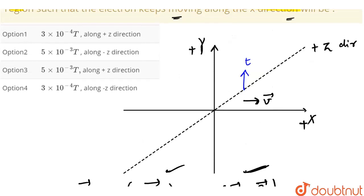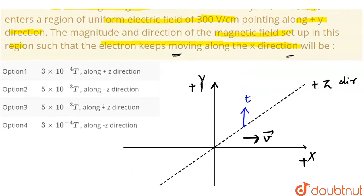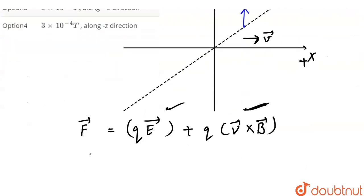Initially the electron was moving along the positive x direction. So what would happen is when the net force on this particle is zero, it would keep on moving in the positive x direction. So the net force on this electron is zero.